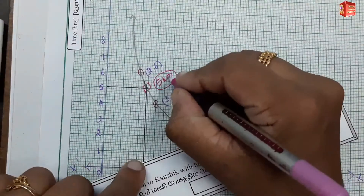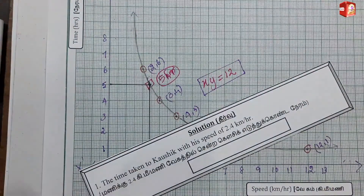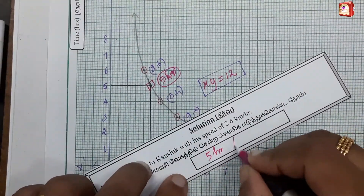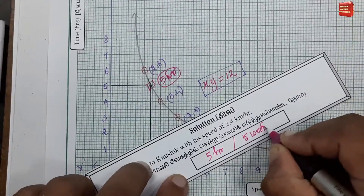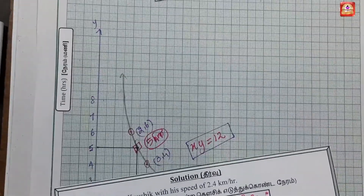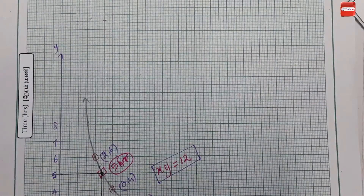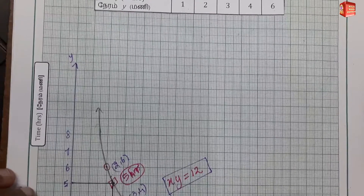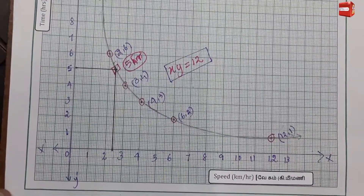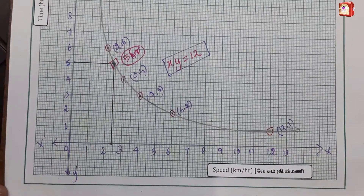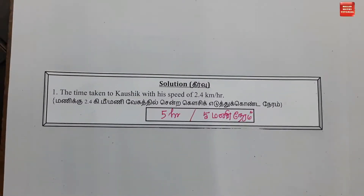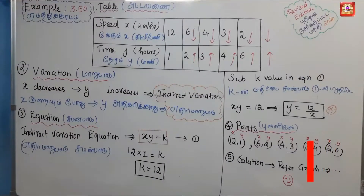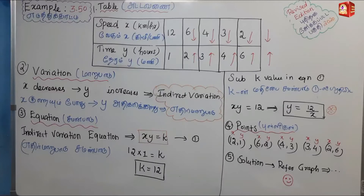The answer is: the time taken by Kausik at a speed of 2.4 km per hour is 5 hours. From the graph, when speed is 2.4, the corresponding time is 5. Thank you.